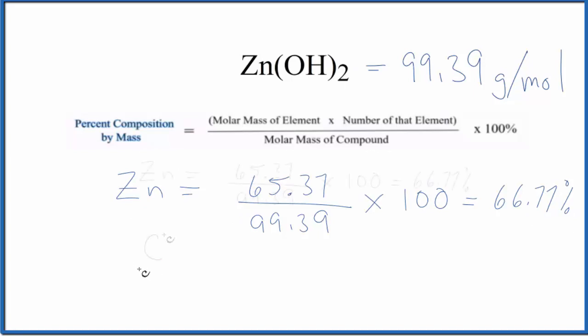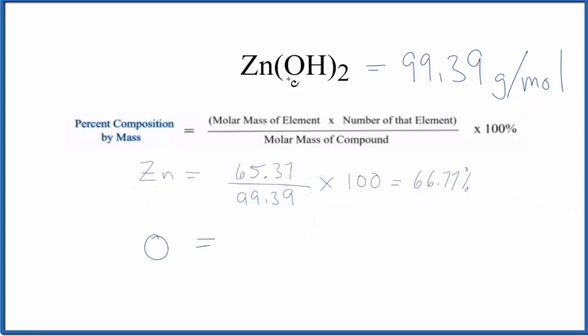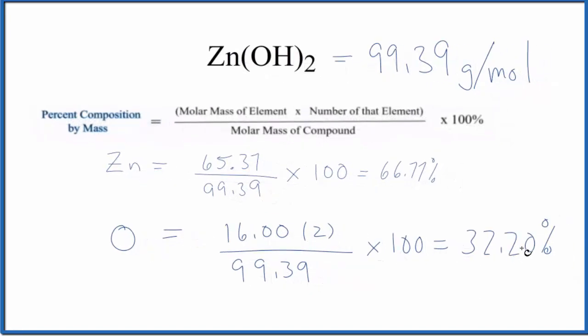We do the same for oxygen. We have the atomic mass for oxygen, that's 16.00 grams per mole. The number of oxygens we have is two, so we multiply this by 2, and then we divide by the molar mass for the compound. Multiply it by 100 and we get 32.20 percent. That's the percent composition of oxygen in our Zn(OH)2.